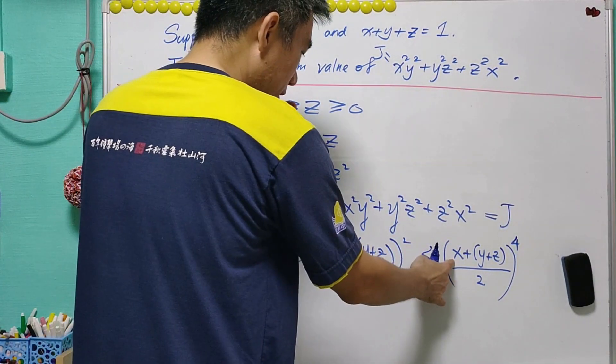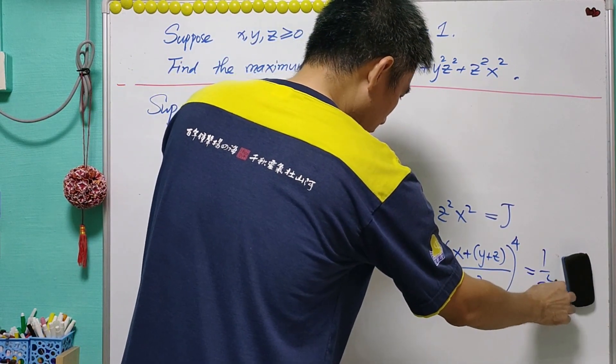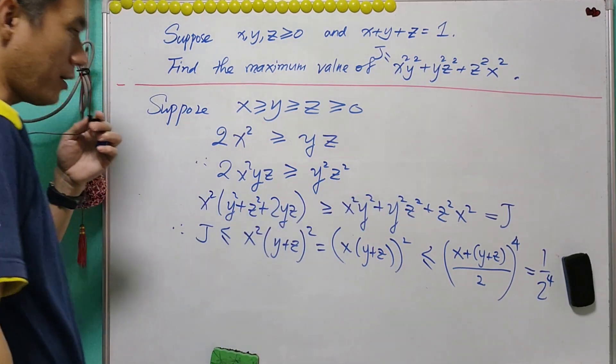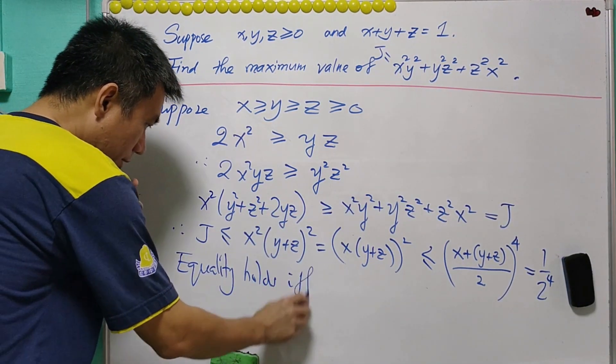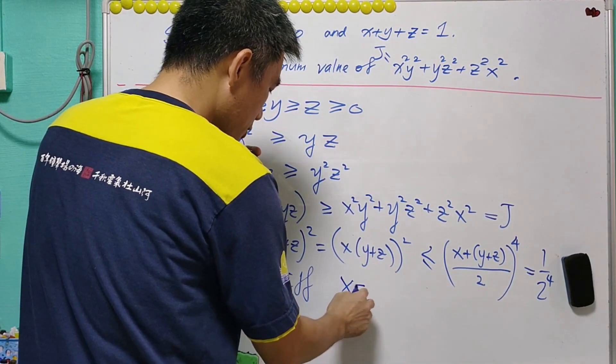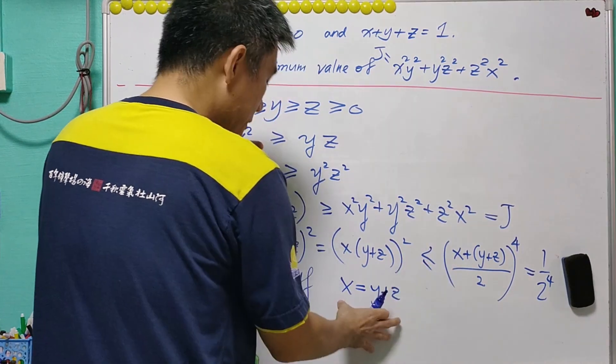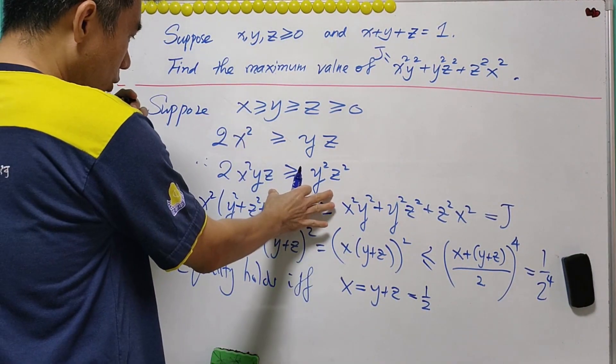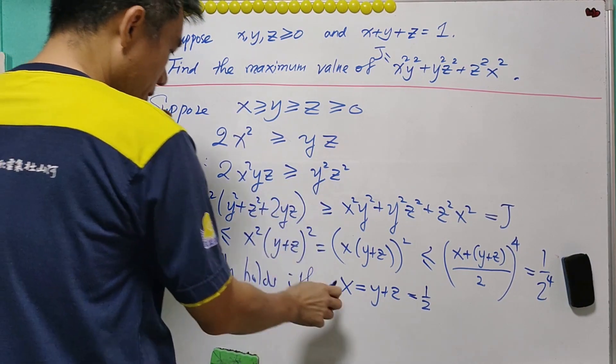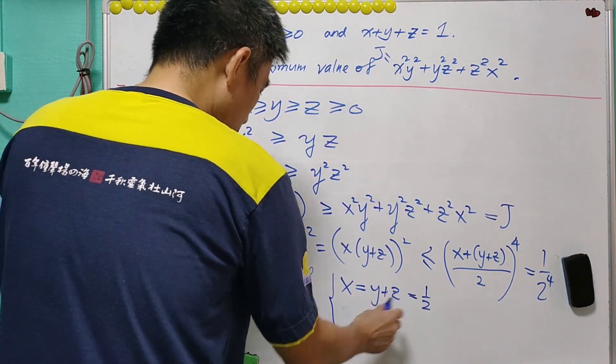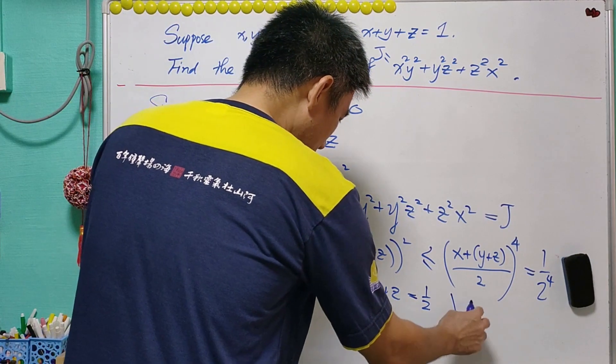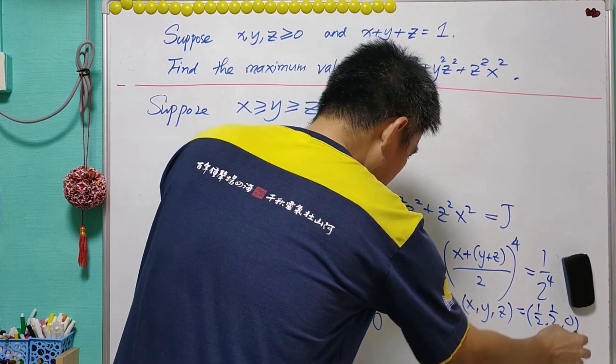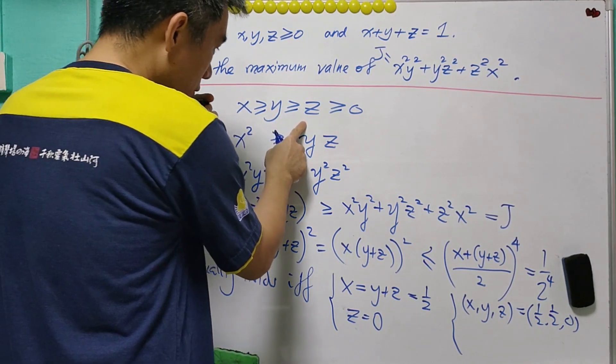Now, we know that the sum of x, y, z is equal to 1. So, this is equal to 1 over 2 to the power of 4. Again, in this case, we prove that j is not more than 1 over 2 to the power of 4. Equality holds if and only if x has to be equal to y plus z. And since x plus y plus z is equal to 1, then this must be equal to half. And from here, equality holds only if z is equal to 0. So, we have two conditions: x equals half and z equals 0. So, this will mean that x, y, z is actually equal to half, half, and 0.